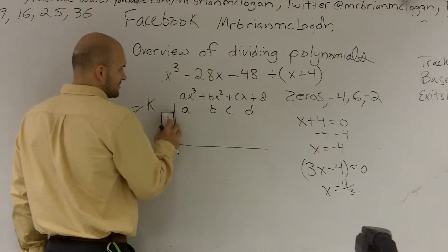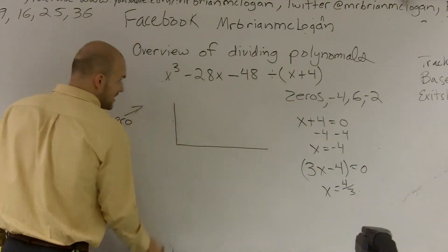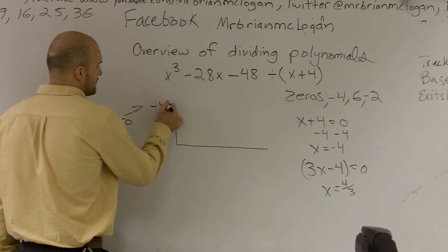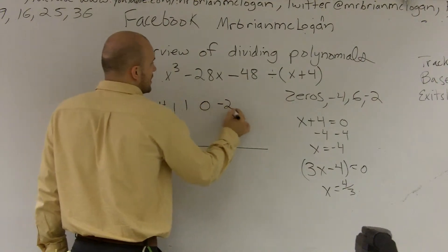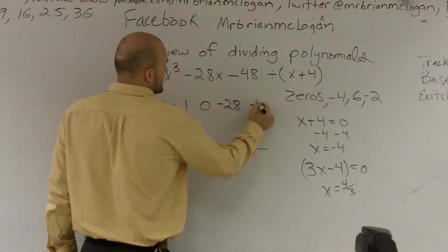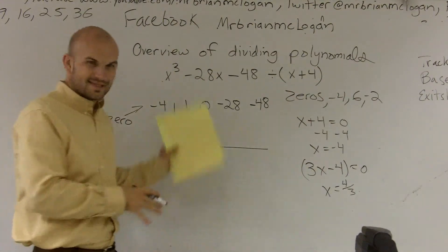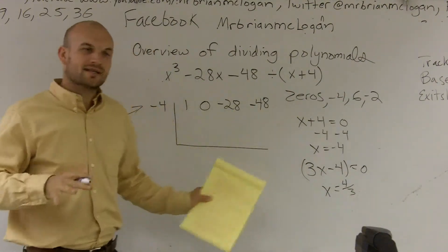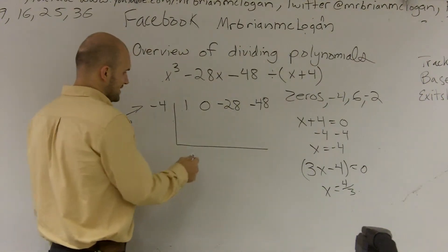All right, so let's go and take a look at what I would look at here. So if I was actually going to do this problem, my zero would be negative 4, and here would be 1. Again, I don't have an x squared, so it's going to be 0, a negative 28, and a negative 48. Now, I'm going to show you, we'll go through the synthetic division part. I'm not really concerned about that right now. You guys can watch the other videos for that.